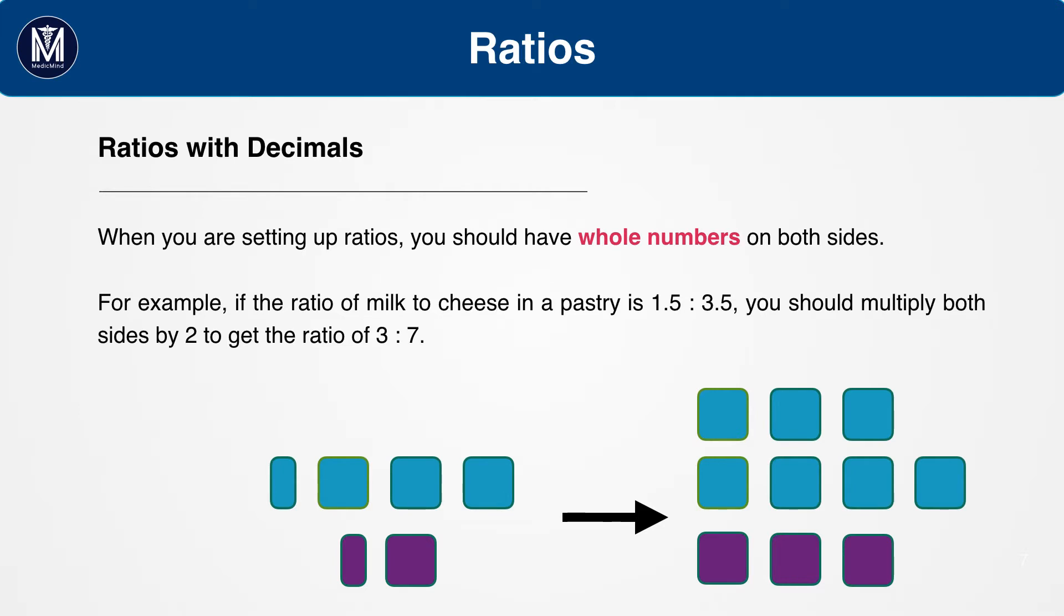When you are setting up ratios, you should have whole numbers on both sides. For example, if the ratio of milk to cheese in a pastry is 1.5 to 3.5, you should multiply both sides by 2 to get the ratio of 3 to 7.